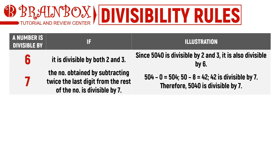The rule for 7 is a bit tricky, and for larger numbers with four or more digits, it might be simpler to just perform the division. However, the method for testing divisibility by 7 works best for two- to three-digit numbers: take the rightmost digit, multiply it by 2, and subtract the result from the rest of the number. Applying this to 5040: twice the last digit 0 is 0, subtracted from 504 gives 504. Repeating the rule: twice the last digit 4 is 8, subtracted from 50 gives 42. Since 42 is divisible by 7, 5040 is also divisible by 7.